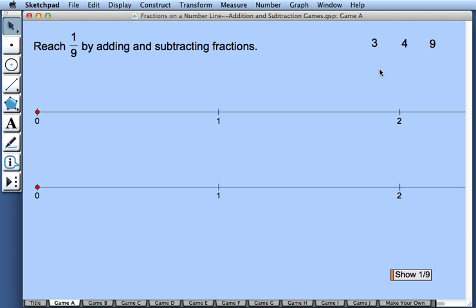Now to make a fraction, we have a choice of numerators and denominators. And in this first game, they're limited to 3, 4, and 9. These are the only three numbers we can use as part of the numerator or denominator of our fractions.